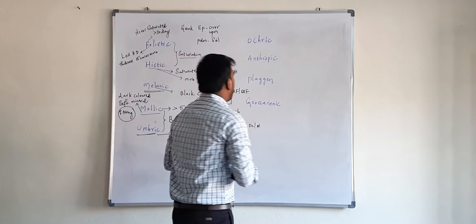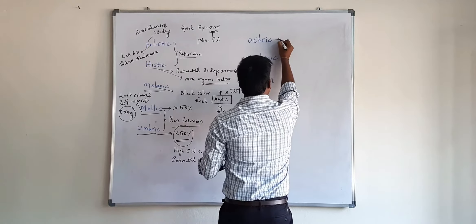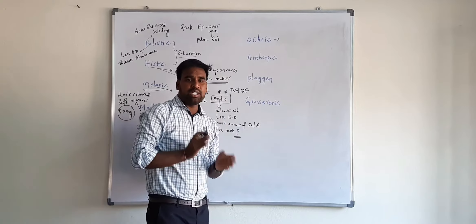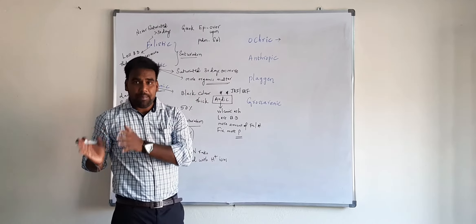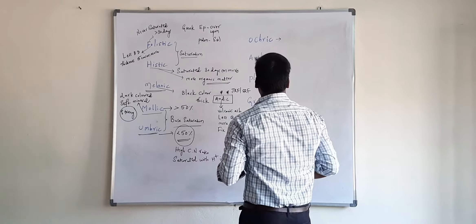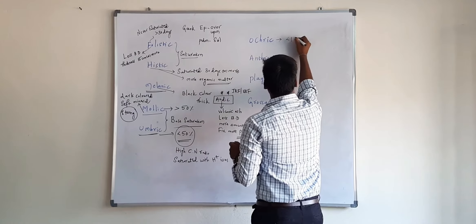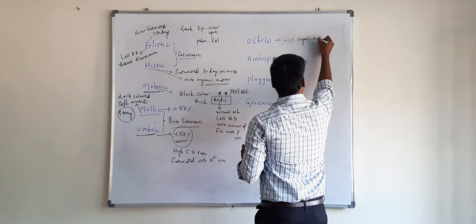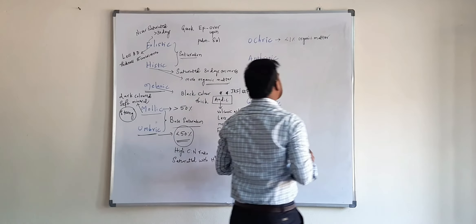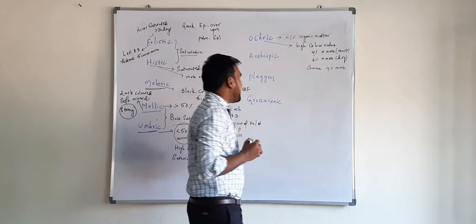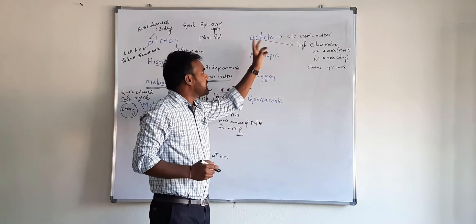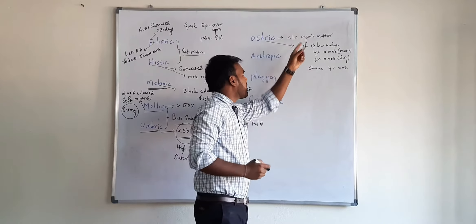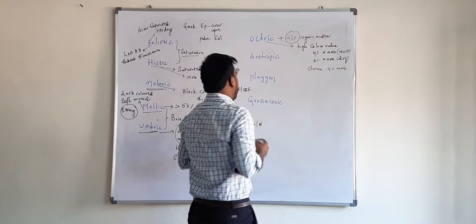Coming to ochric epipedan — remember this particular ochric epipedan does not meet the definition of any other epipedans. It has less than 1% of organic matter and is a light colored epipedan, because it has less than 1% of organic matter.